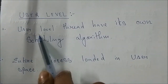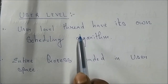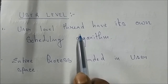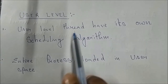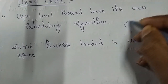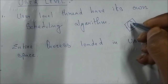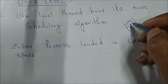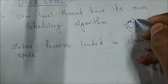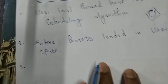User level thread has its own scheduling algorithm. It means that in user level thread, they are using their own algorithm and do not depend on other algorithms. The entire process is loaded in user space — the whole process is loaded in user space only. The full process depends on user space, not on kernel space.